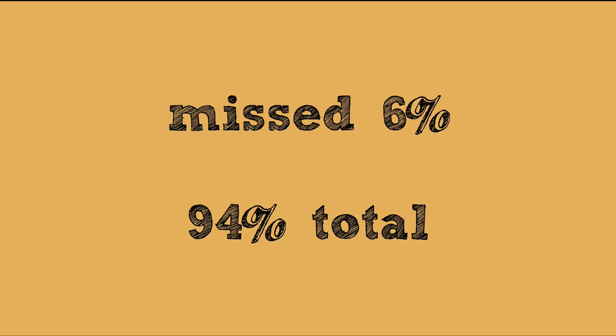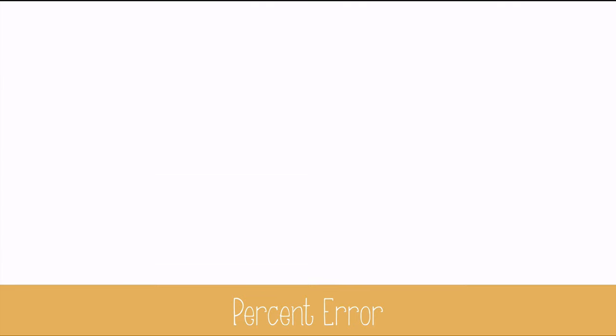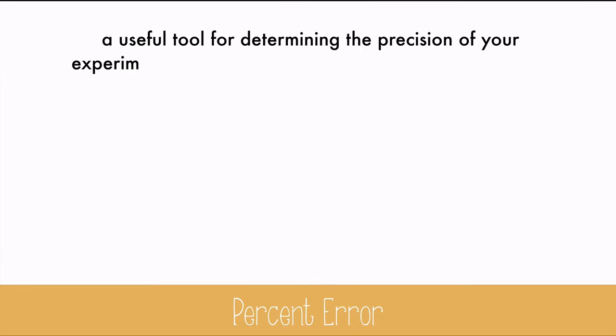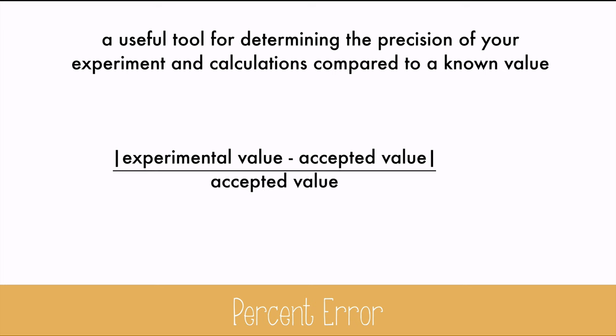For similar reasons, we use percent error to calculate how close our data came to a known value. Percent error is a useful tool for determining the precision of your experiment and calculations compared to a known value. It will compare the data from your experiment to the data that the scientific community agrees upon and accepts as true. It's calculated by taking the absolute value of the experimental data minus the accepted value and then divided by the accepted value. If you multiply by 100, you'll get a percentage.